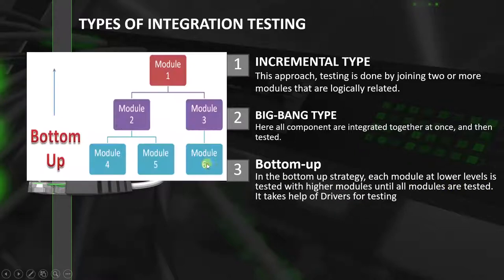Let's use an example to understand this. Here is a complete software. With the bottom-up strategy, we will start testing from the bottom-most module. Module 4 will be integrated with module 2 and then it will be tested. Then module 2 will be integrated with module 1 and then that will be tested. Similarly, module 5 will be integrated with module 2, which will then be integrated with module 1. This is why it is called the bottom-up approach.